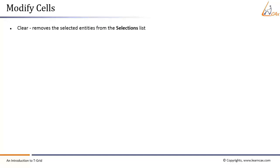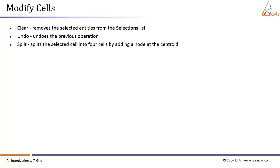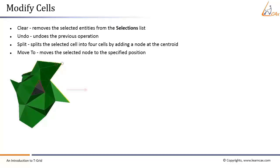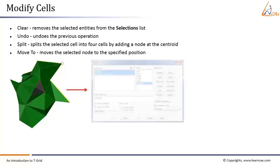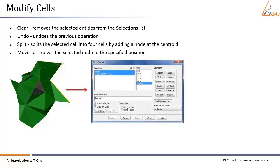Additional Modify Cells operations include: Clear — removes selected entities from the selections list; Undo — undoes the previous operation with a message displayed in the terminal; Split — splits the selected cell into four cells by adding a node at the centroid; and Move To — moves nodes to selected positions. To use Move To: select Node in the filter list, select the node to move, then select Position in the filter list, select the target position using the right mouse button, and click Move To so T-Grid moves the selected node to the specified position.